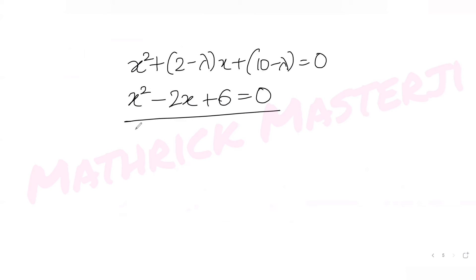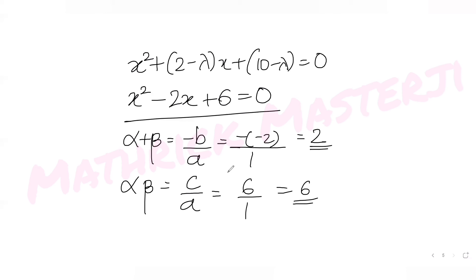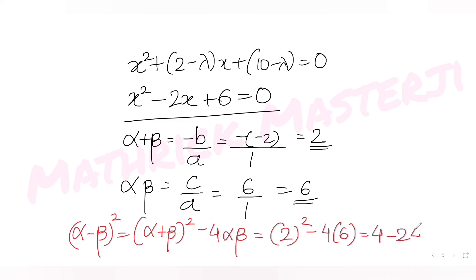From this quadratic, α + β = -(-2)/1 = 2 and α·β = 6/1 = 6. Now, (α - β)² = (α + β)² - 4αβ = 2² - 4(6) = 4 - 24 = -20.